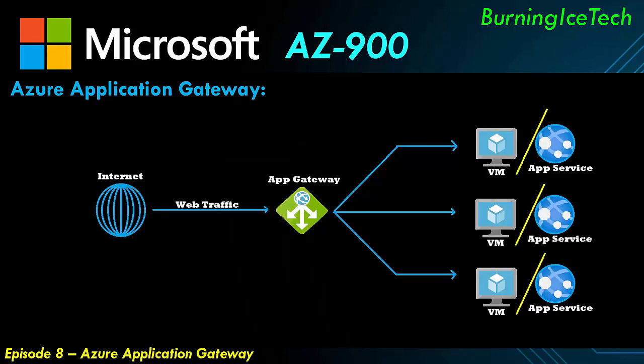Going back to the picture: traffic coming in from the internet is normally encrypted, in other words HTTPS. The app gateway decrypts that traffic for you, and from the app gateway to your virtual machine or app service it becomes normal HTTP — clear text. So the app gateway takes on some of that load, meaning less scaling happens at the back end for your virtual machines and app services. Less scaling means fewer resources used, which means lower cost. In Azure, you pay for what you use, so ideally you want the app gateway handling that decryption.